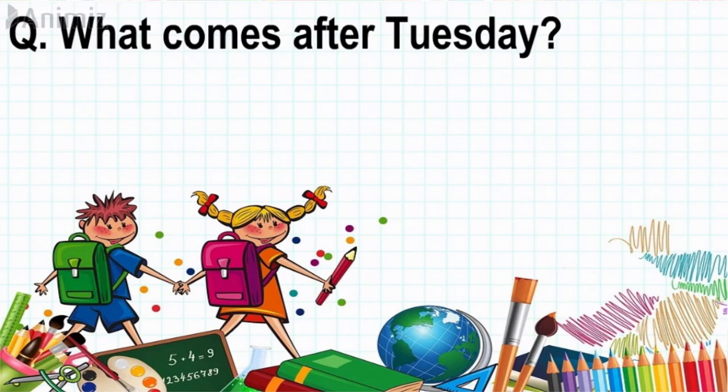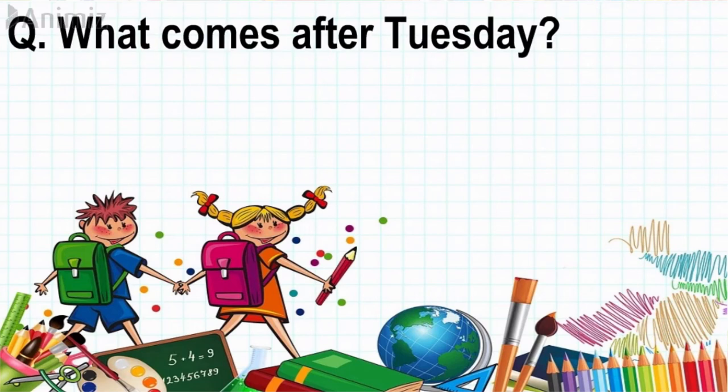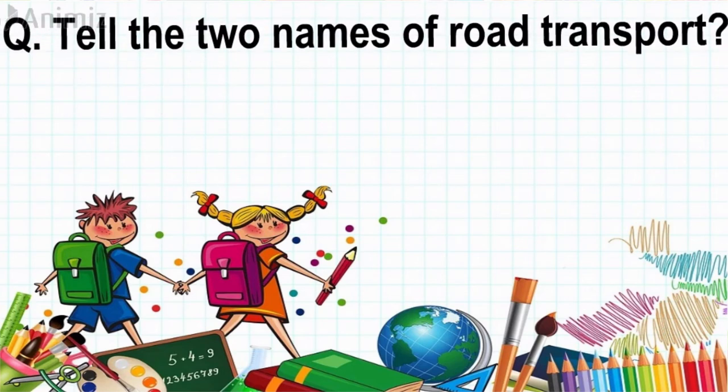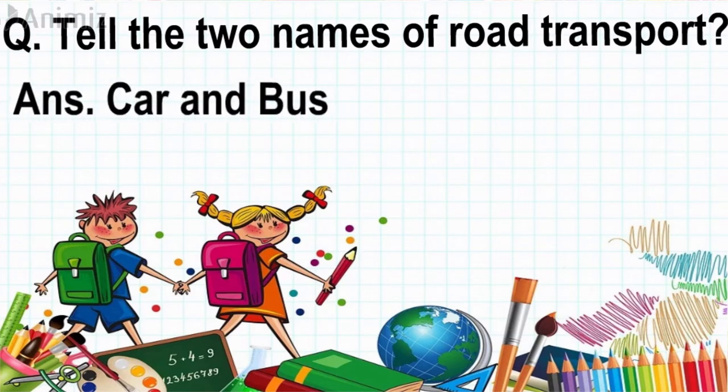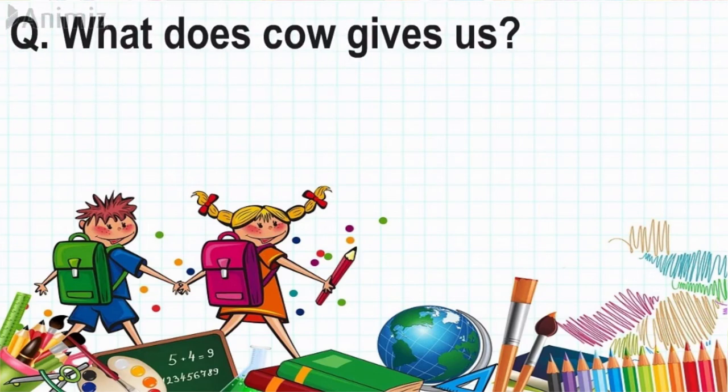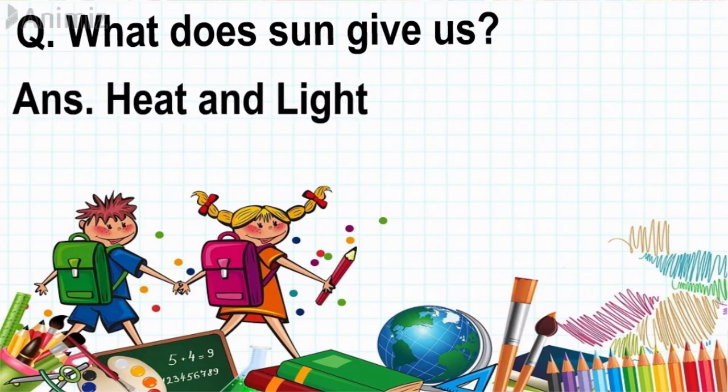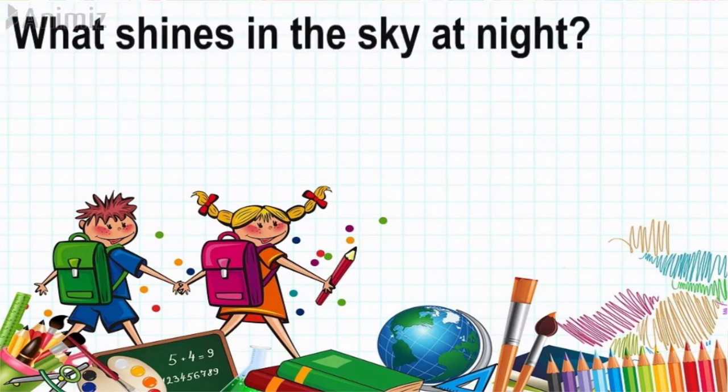Question: What comes after Tuesday? Answer: Wednesday. Question: Tell two names of transport? Answer: Car and bus. Question: What does cow give us? Answer: Milk. Question: What does sun give us? Answer: Heat and light. Question: What shines in the sky at night? Answer: Stars.